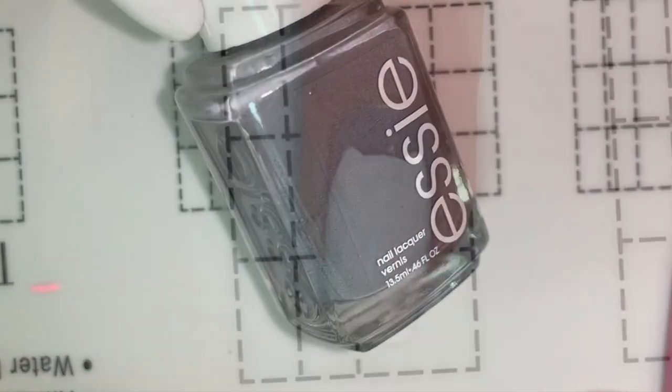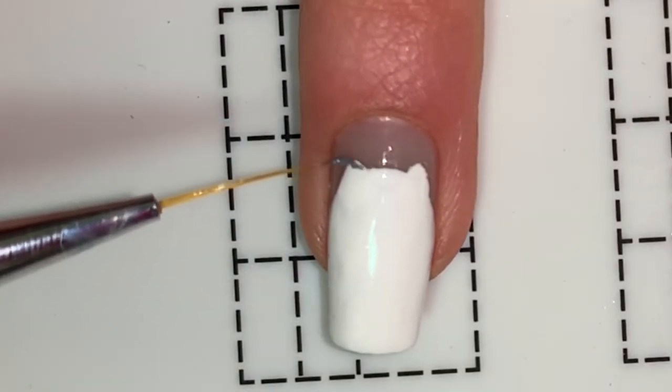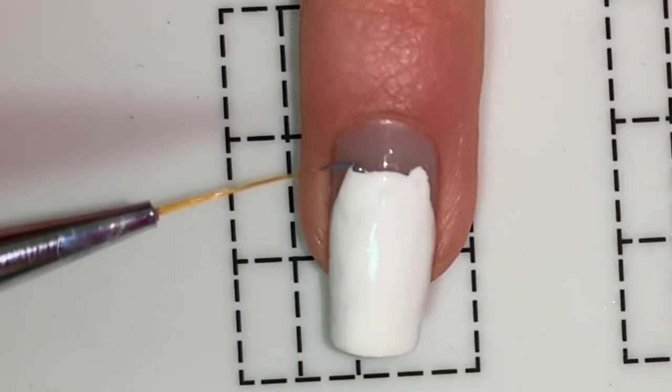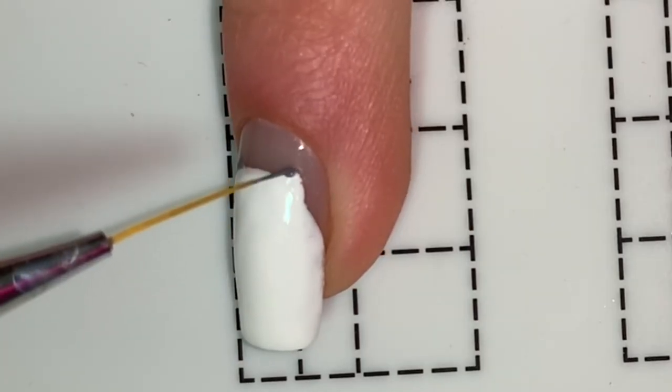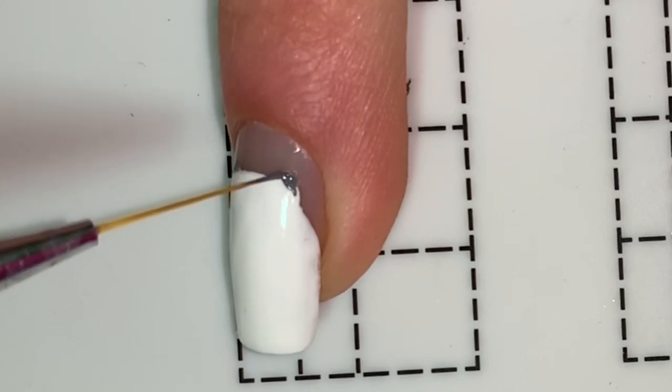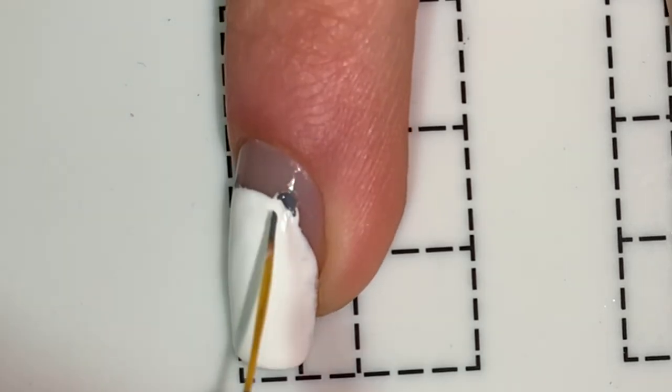Now for the final and most time-consuming bear, I'm starting off with this gray nail polish. I'm going to fill in the ears, do circles around the eyes, and then fill in the bottom of the bear and do little circle things for the arms.